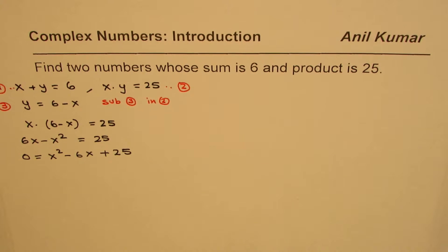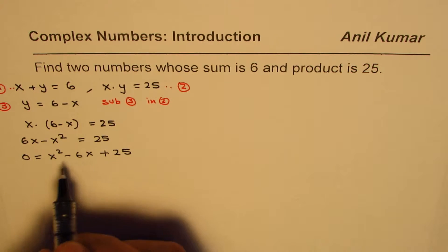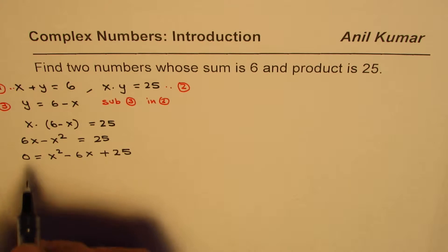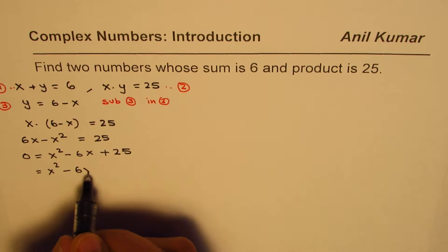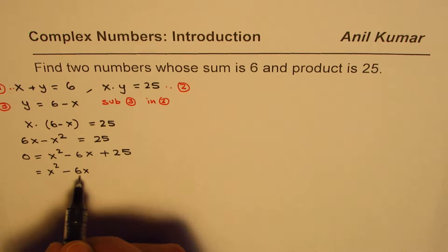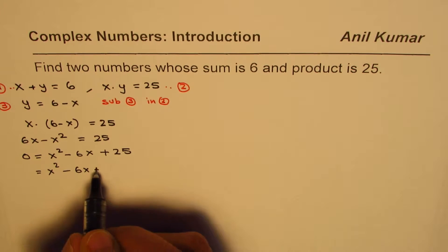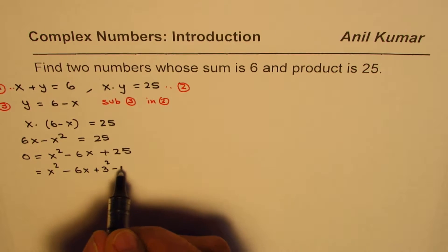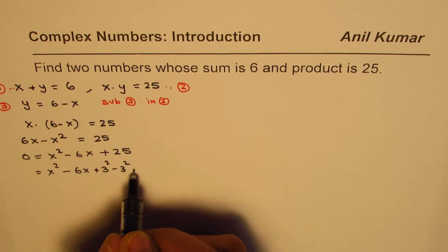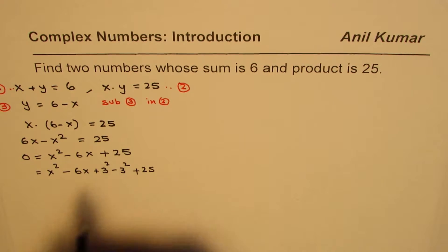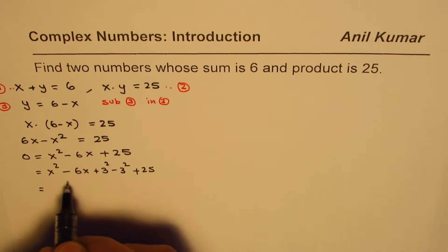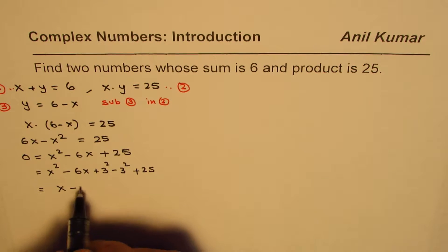We can complete the square to solve this equation — you could also use the quadratic formula, but let's complete the square. To do so, we add and subtract the square of half of 6, which is 3. So we add and subtract 3 squared — this is the completing the squares method.